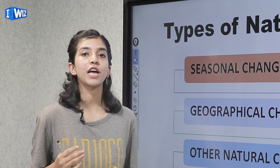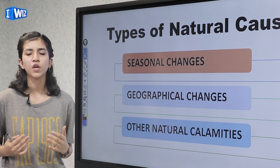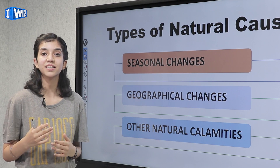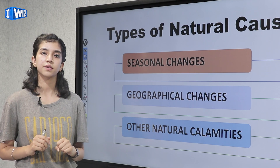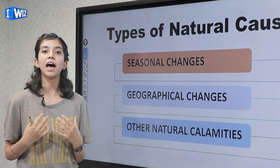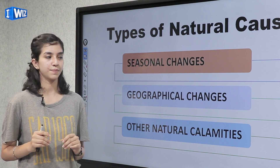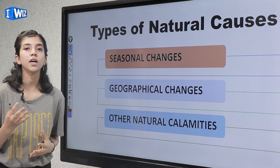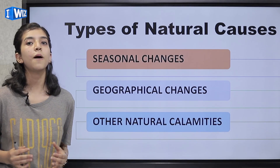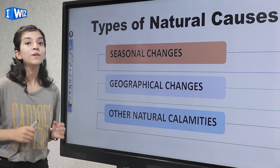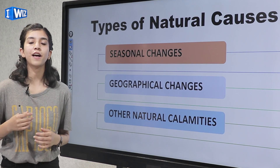There are three types of natural causes. The first is seasonal changes — when seasons change, demand changes, and an unforeseen risk arises. But we can always prepare by keeping inventory in limited amounts to avoid unsold items. The second is geographical changes — an earthquake or cyclone can cause huge damage to a business; all a business can do is prepare for it. The third is other natural calamities such as lightning or wildfire.